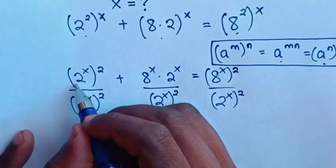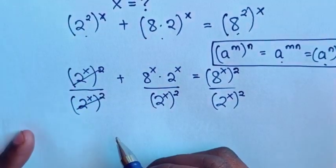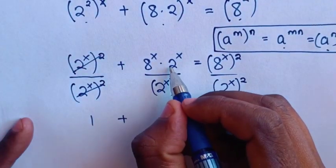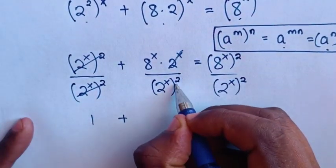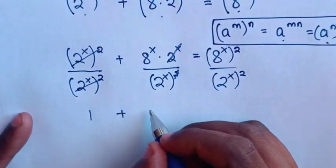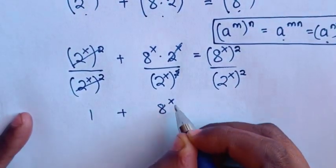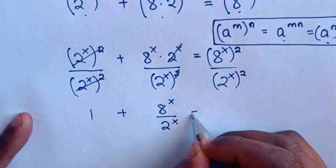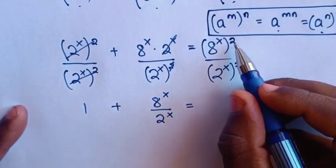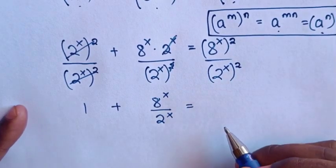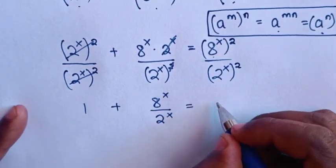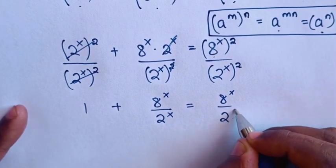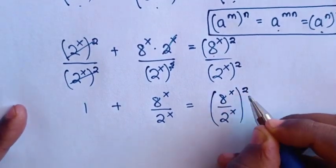After dividing, the (2^x)^2 terms cancel on the left side, giving 1. For the middle term, one factor of 2^x cancels, leaving 8^x over 2^x. On the right side, since the power of 2 is common, it becomes (8^x) over (2^2).